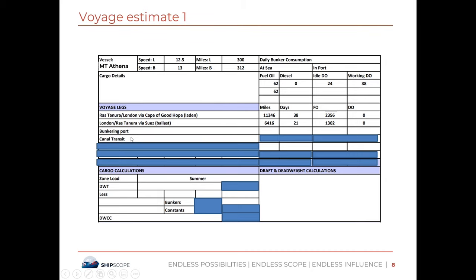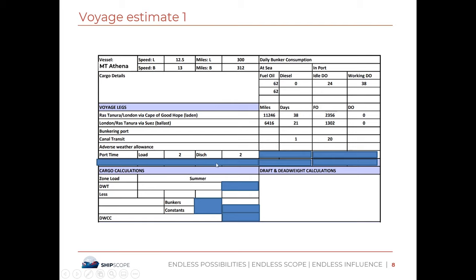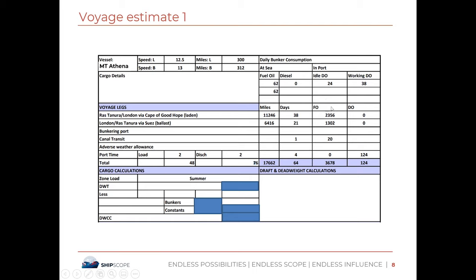There is no bunkering en route in this question. We do have a canal transit of one day consuming an additional 20 tons of fuel oil. There is no adverse weather allowance. Port time: loading port is two days and discharging port is two days, four days total. In tankers, the ship remains idle when loading, so idle diesel oil at 24 tons times 2 days equals 48 tons. When discharging, the ship is working, so 38 tons times 2 days equals 76 tons of diesel oil. Total diesel oil is 124 tons. Total voyage days are 64, and total fuel oil consumption is 3,678 tons.